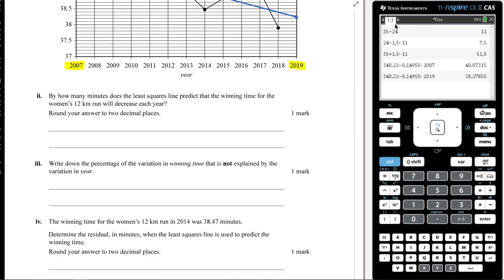All right, let's answer this question here, which says: by how many minutes does the least squared line predict that the winning time for the women's 12 kilometer run will decrease each year? Round your answer to two decimal places.